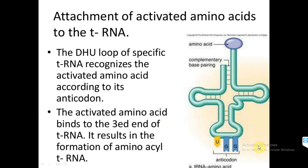Once amino acids are activated, they are attached to the transfer RNA. The tRNA has a cloverleaf structure with different arms and loops. The DHU loop of the specific tRNA recognizes the activated amino acids according to its anticodons. Anticodons are essential for recognizing the particular amino acids so that they can be attached to the tRNA.